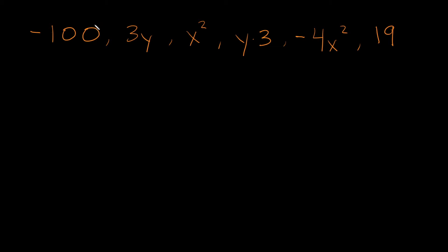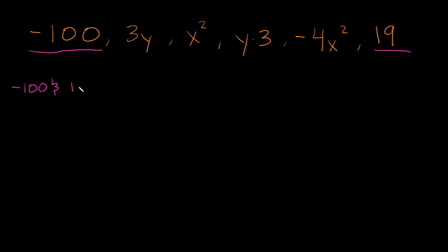Here's our next list of terms: negative 100, 3y, x squared, y times 3, negative 4x squared, and 19. Let's start with negative 100 — it's just a number. It doesn't matter if it's positive or negative, it's just a number. So we're looking for another term that is just a number, which would be 19. So negative 100 and 19 are like terms.